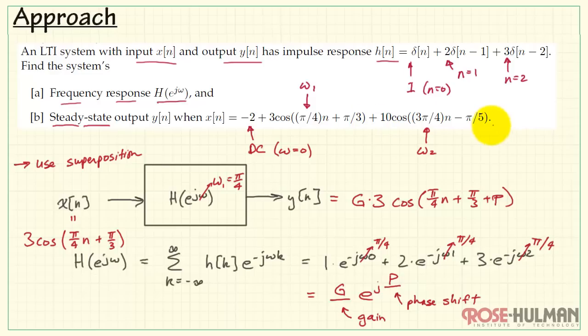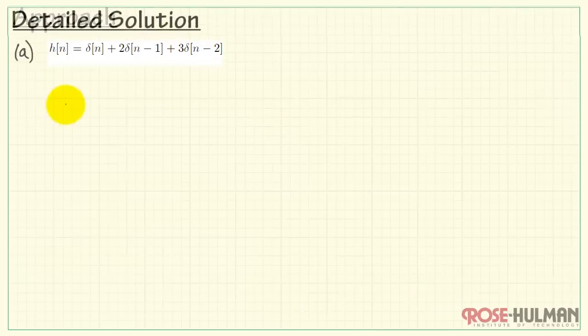We would do essentially the same operation for the second sinusoid. And then, with superposition, we simply sum the individual responses. All right, let's move along to the detailed solution.